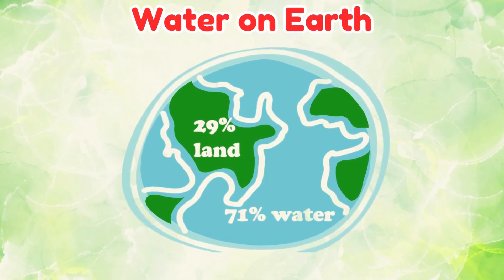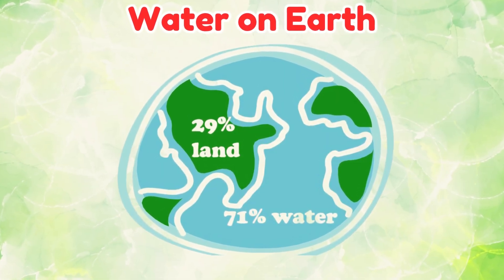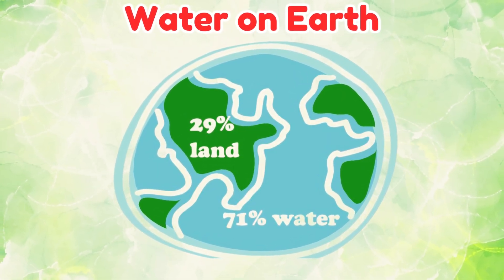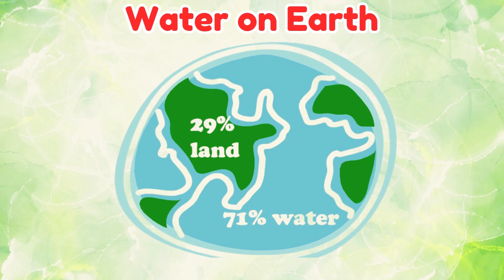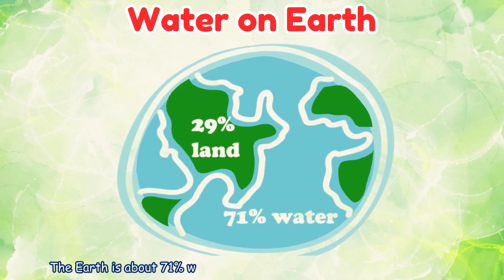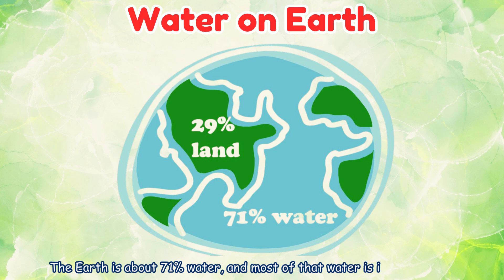Water on Earth. The Earth is about 71% water, and most of that water is in the oceans.